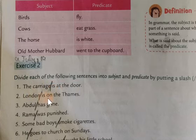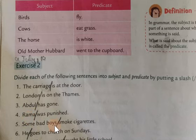'London is on the Thames' — London is subject. 'Abdul has gone' — Abdul is subject. 'Rama was punished' — Rama is subject. 'Some bad boys smoke cartridges' — some bad boys is subject. 'He goes to church on Sundays' — here, he is subject. Saare sentences mein jo dhyan deni ki baat hai woh ye hai aapke saamne ki.